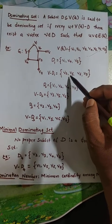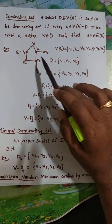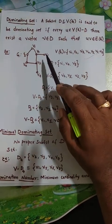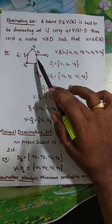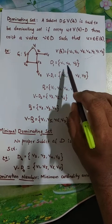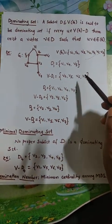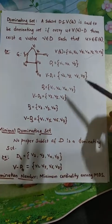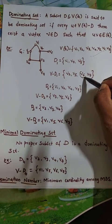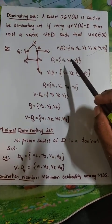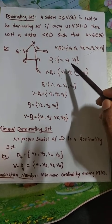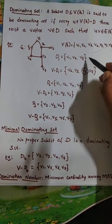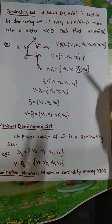Next, V6 is adjacent to only V2, but V2 is not in D1. V7 is adjacent to V3, which is present in D1. However, V6 is not adjacent to any vertex of D1 — there is no edge between D1 and V6 in V minus D1. Therefore, D1 is not a dominating set.